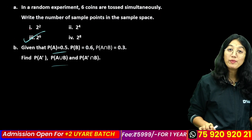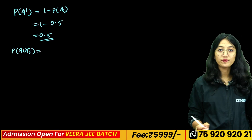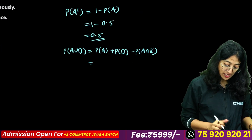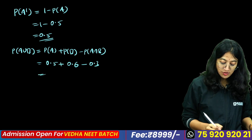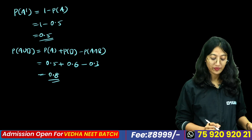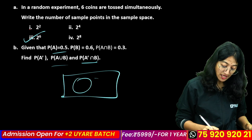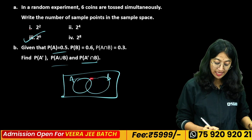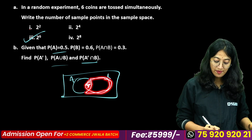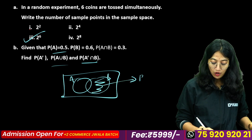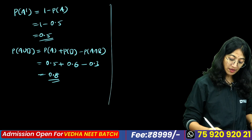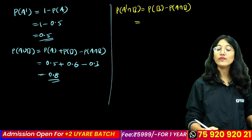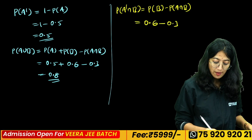Now probability. P(A ∪ B) = P(A) + P(B) – P(A ∩ B). For example: P(A) = 0.5, P(B) = 0.6, P(A ∩ B) = 0.3, so P(A ∪ B) = 0.5 + 0.6 – 0.3 = 0.8. Also, P(A' ∩ B) = P(B) – P(A ∩ B) = 0.6 – 0.3 = 0.3.